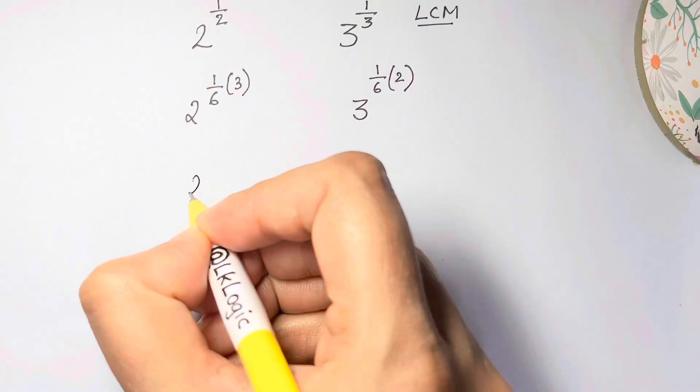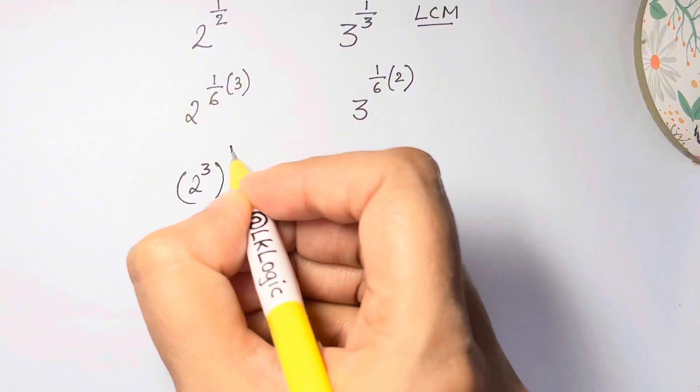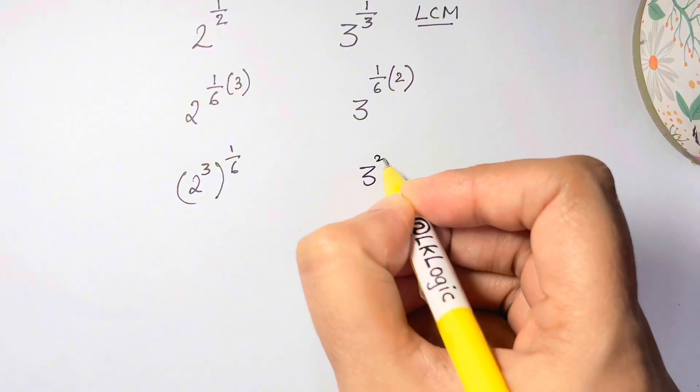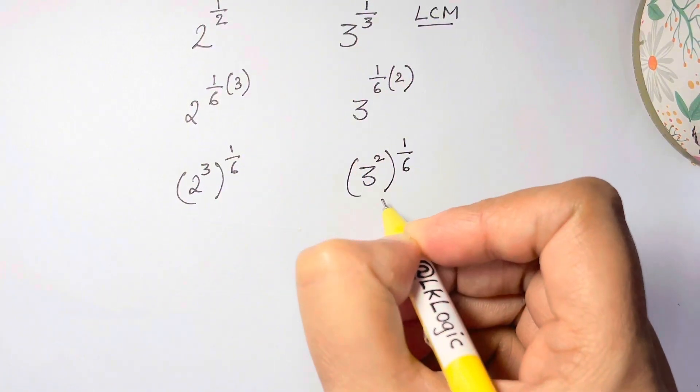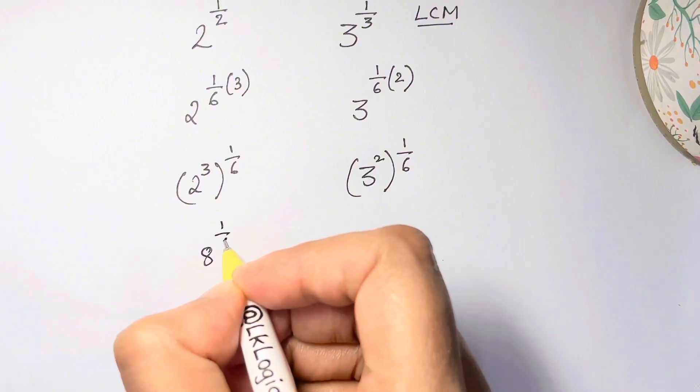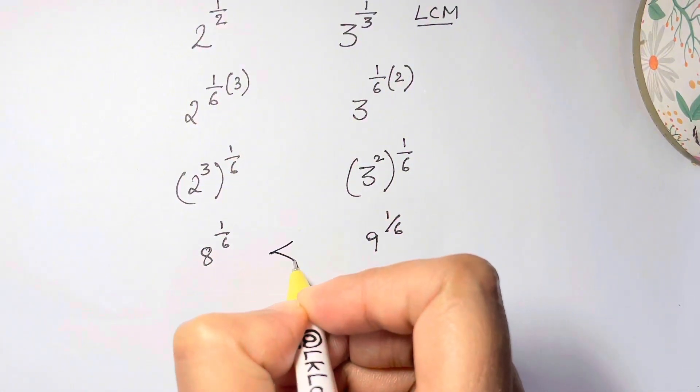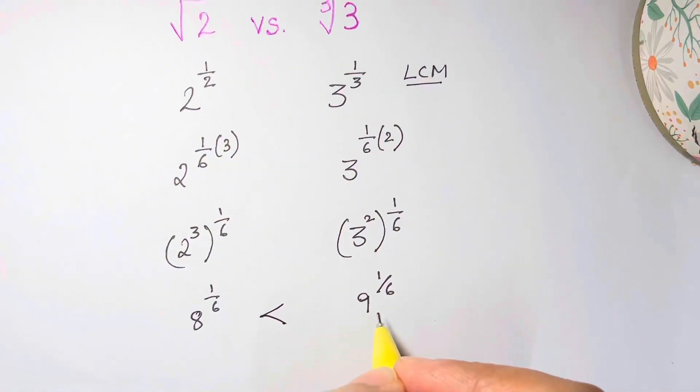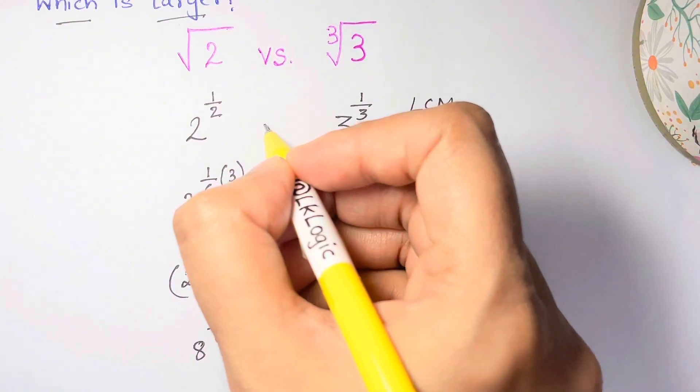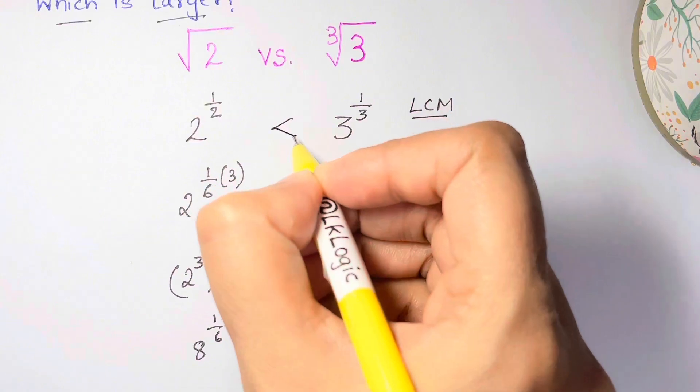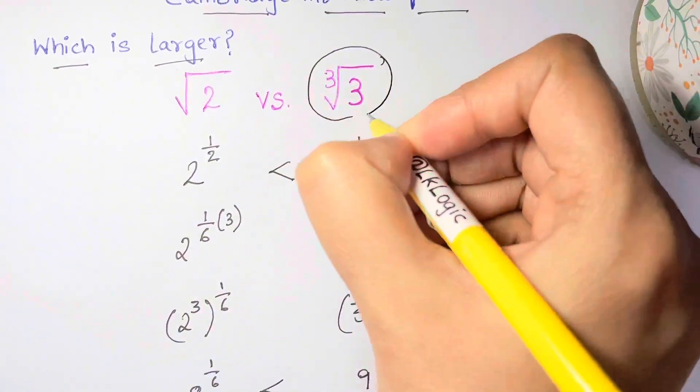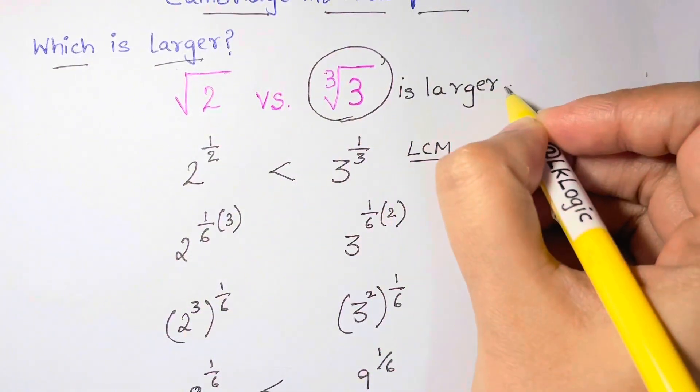2 cubed is 8 and 3 squared is 9. So now you can compare the bases: 8 to the 1/6 is less than 9 to the 1/6. So obviously 3 to the 1/3 is greater than 2 to the 1/2. Therefore, cube root of 3 is larger.